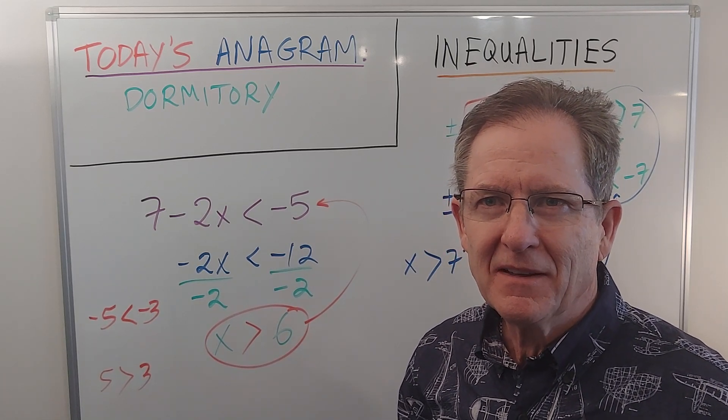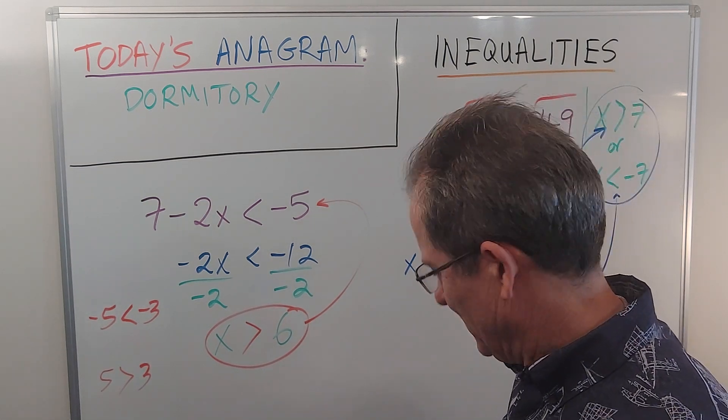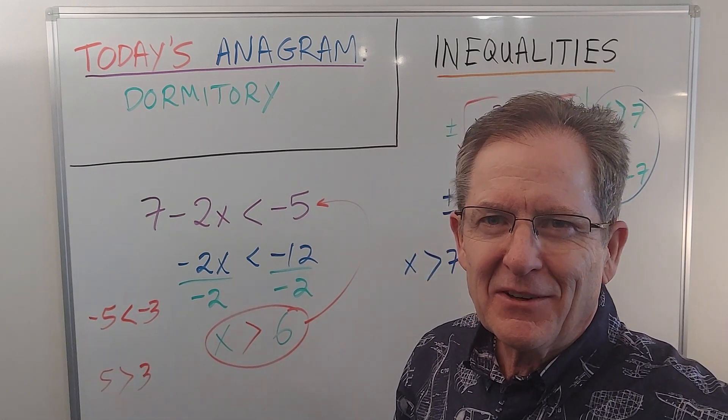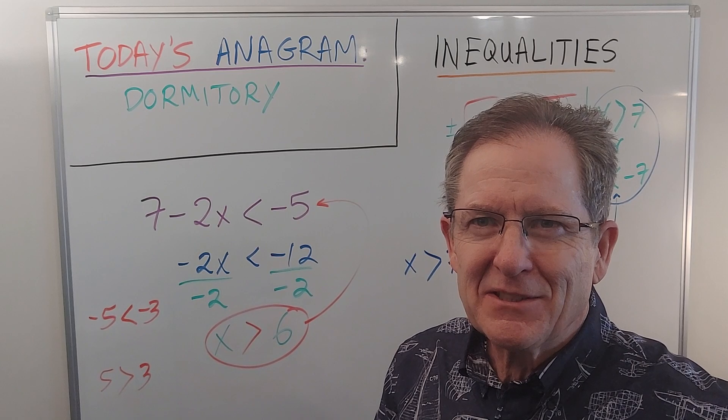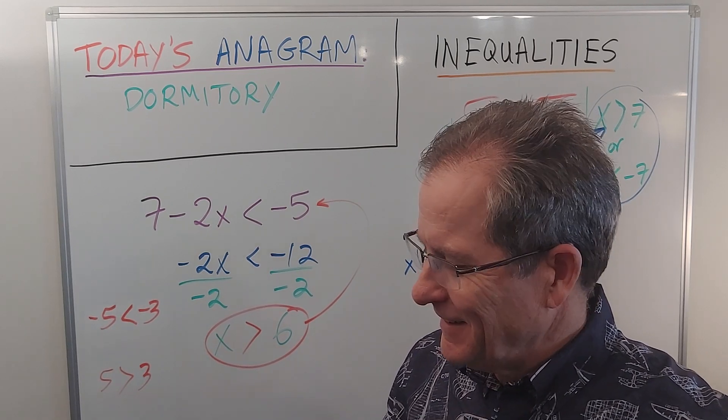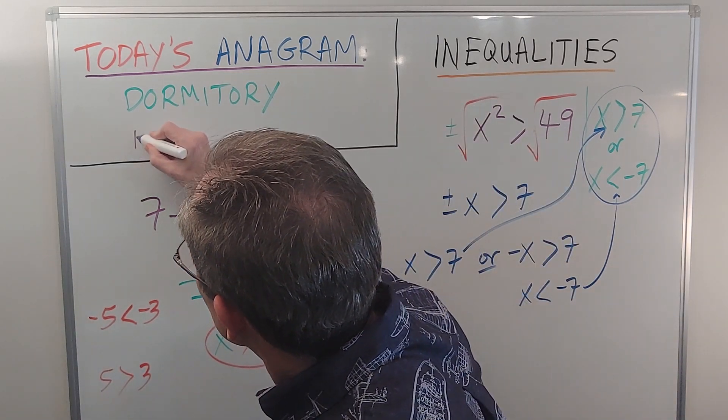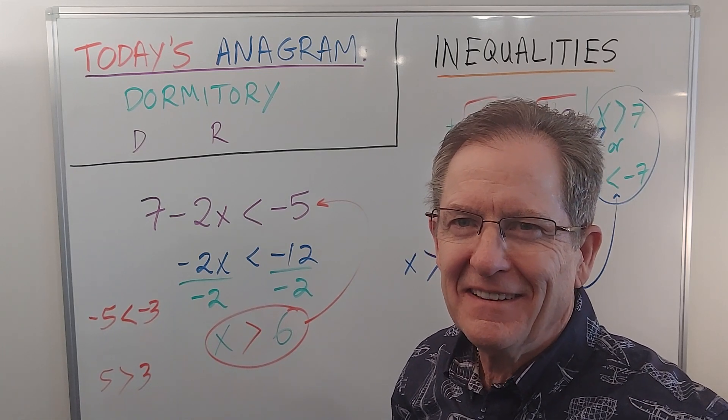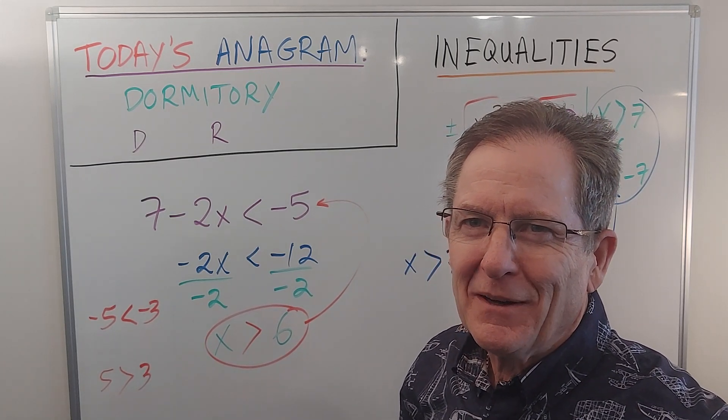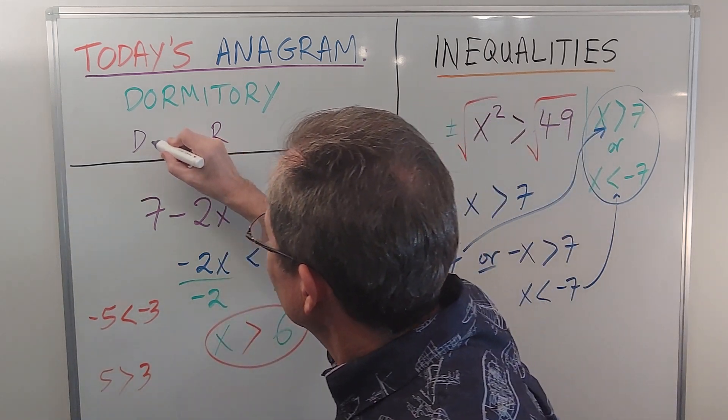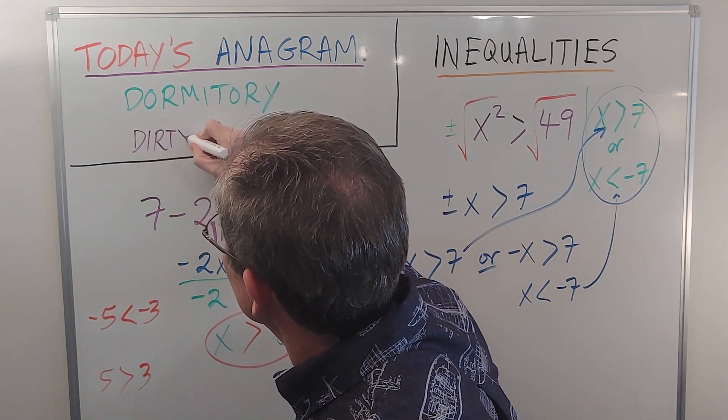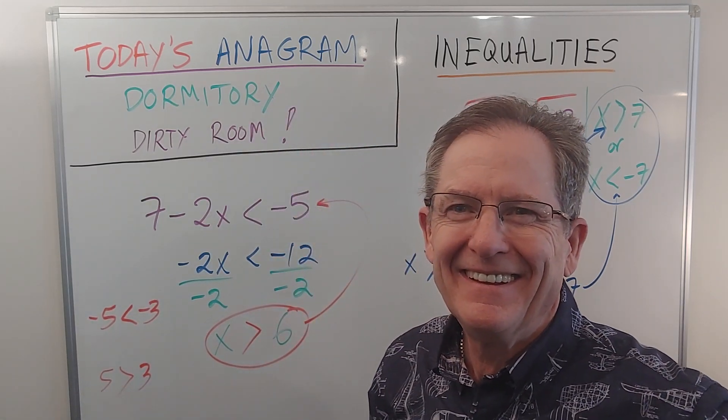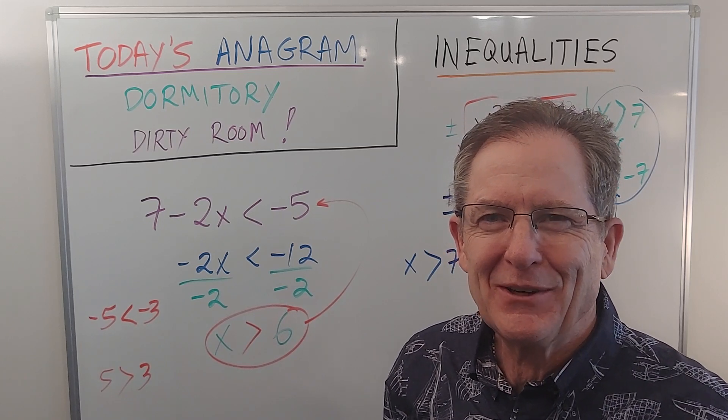But before we finish up, we've got to go back to today's anagram: dormitory. Have you come up with the anagram that sort of relates to a dormitory? It's two words. The first one starts with D, the second one starts with R. If you want to pause, do so and think about it, but I'll just tell you: dirty room. And I'm sure most dormitories are dirty rooms. There you have it. See you soon.